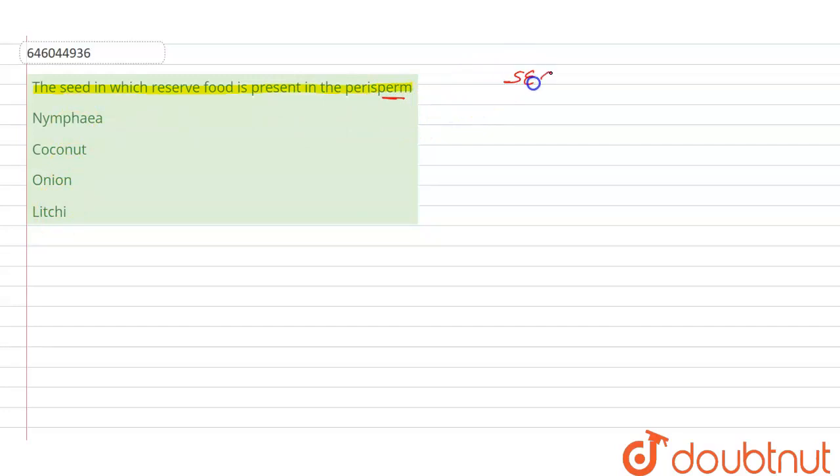Seeds are the end product of fertilization in angiosperms and have stored food in the form of cotyledons. This stored food will be used up during the process of seed germination when the embryo requires it to form the radicle, plumule, and then the plantlet.